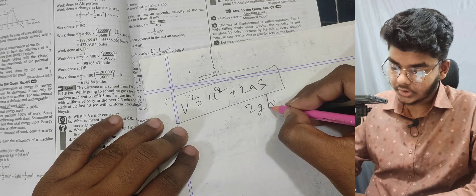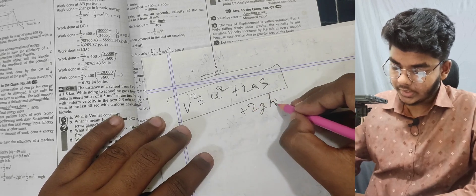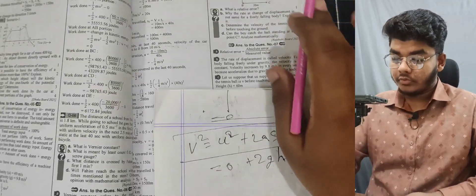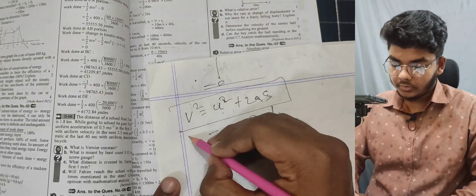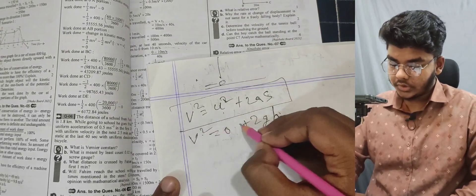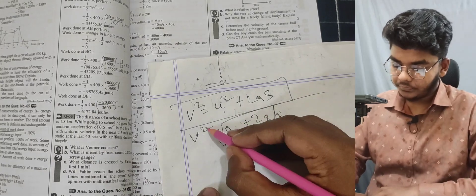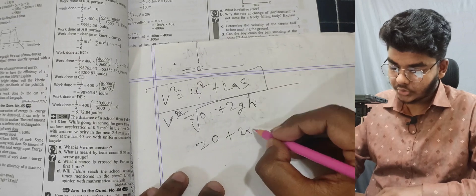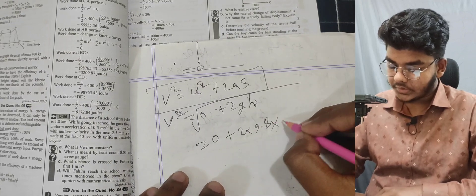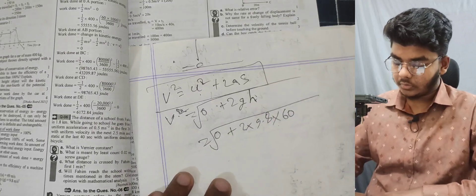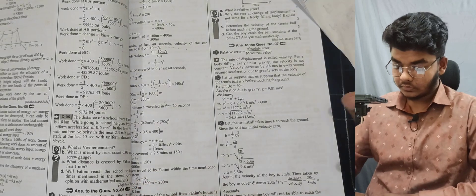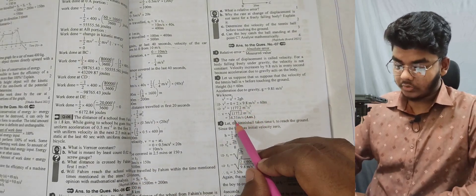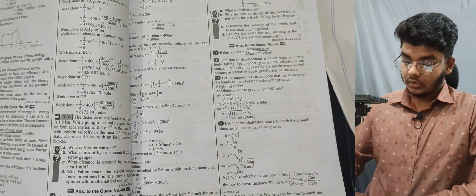The ball is falling from rest, so initial velocity is zero. v² = 0 + 2 × 9.8 × 60. So 2 × 9.8 × 60, taking the square root gives 34.31 m/s.